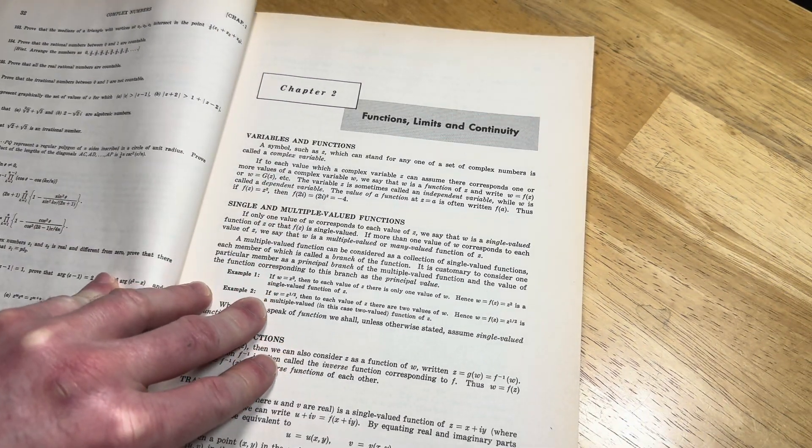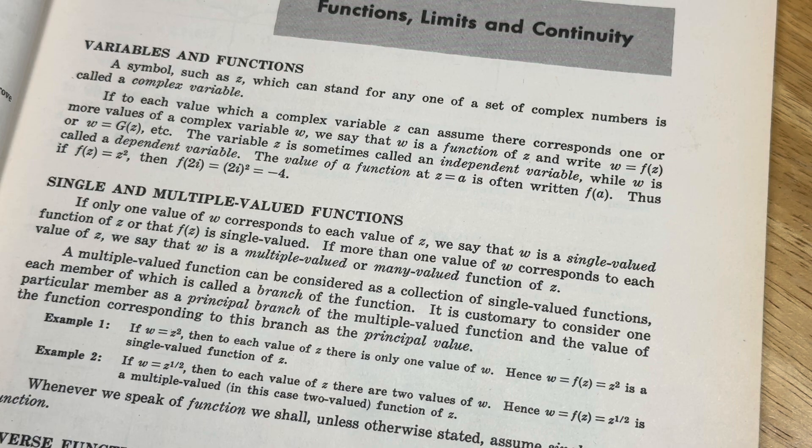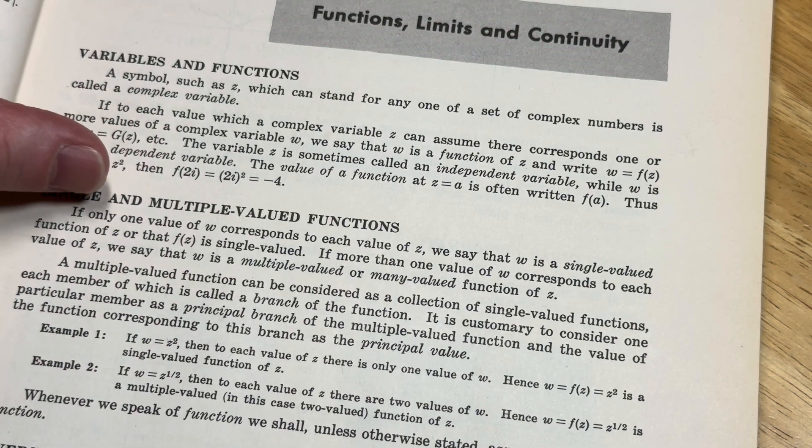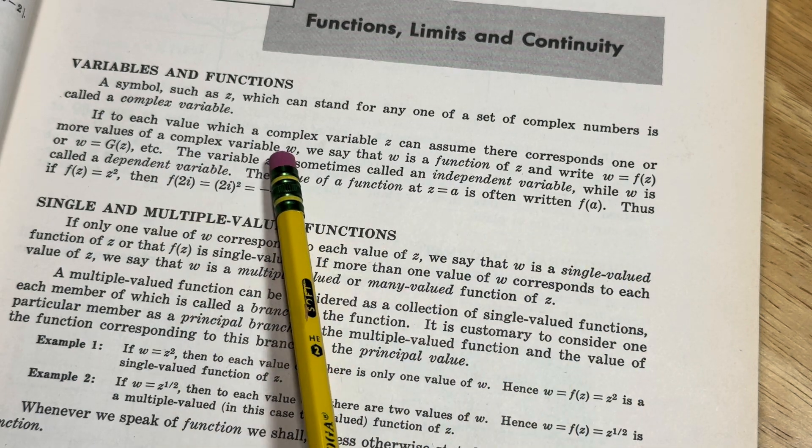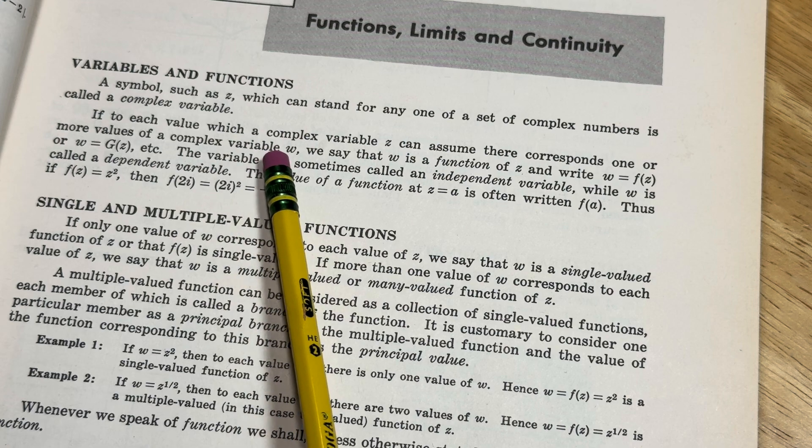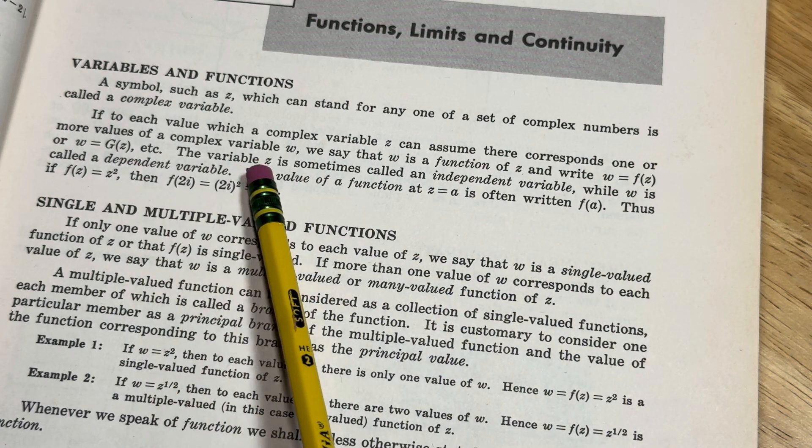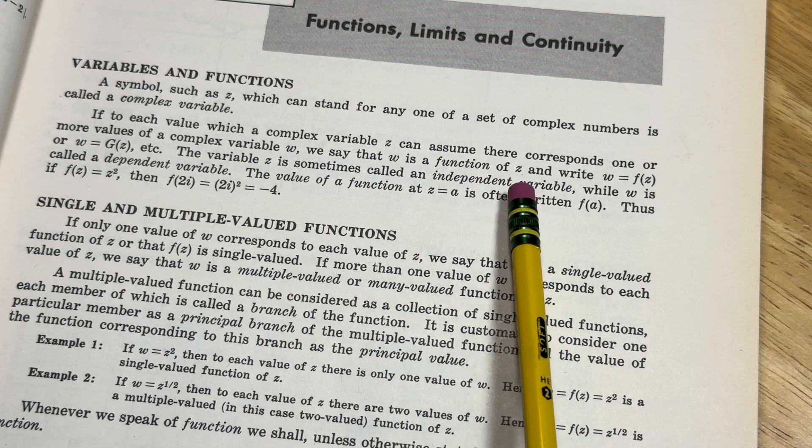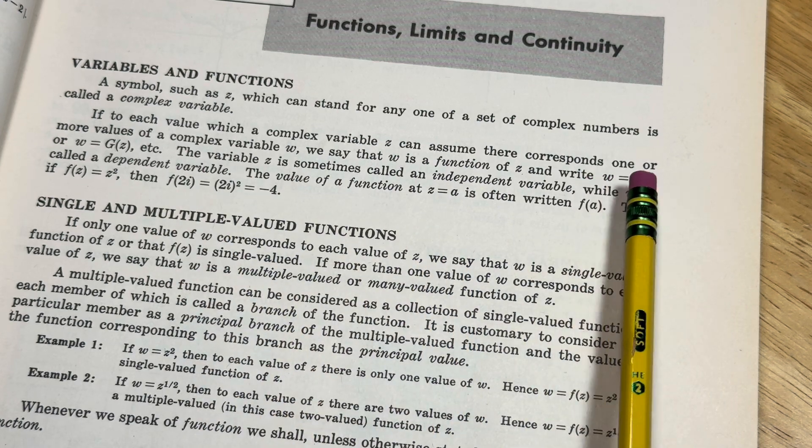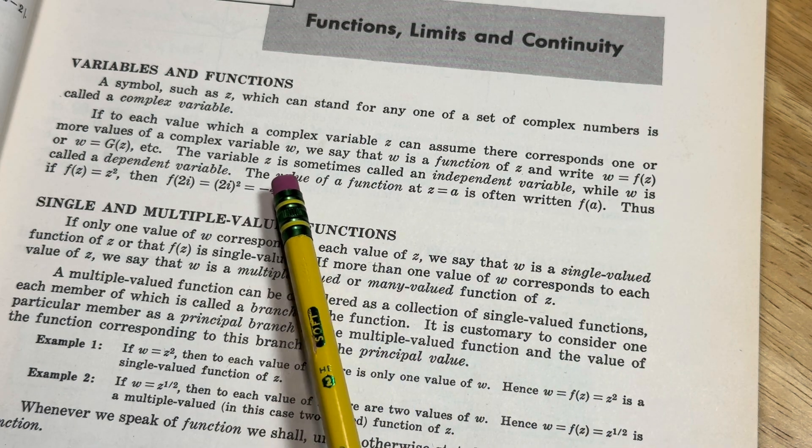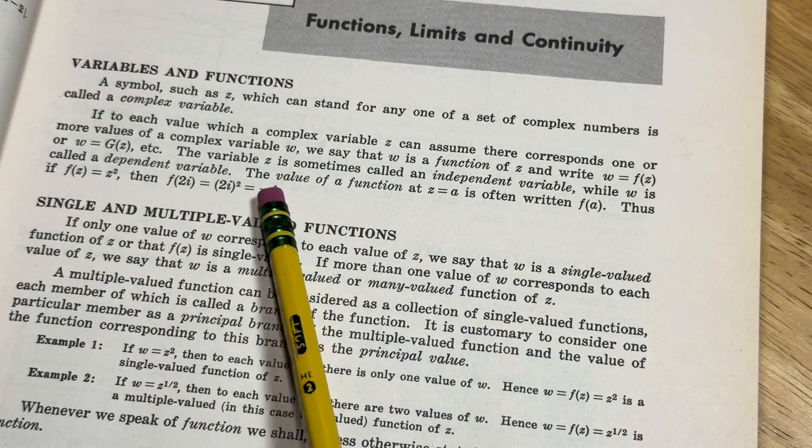Chapter two is on function limits and continuity. Let's take a look at this. Variables and functions: a symbol, such as z, which can stand for any one of a set of complex numbers is called a complex variable. That's the definition of a complex variable. If to each value which a complex variable z can assume there corresponds one or more values of a complex variable w, we say that w is a function of z and write w equals f of z. The variable z is sometimes called an independent variable, while w is the dependent variable because it will depend on z. Thus if f of z equals z squared, then f of 2i is, for example, negative 4.